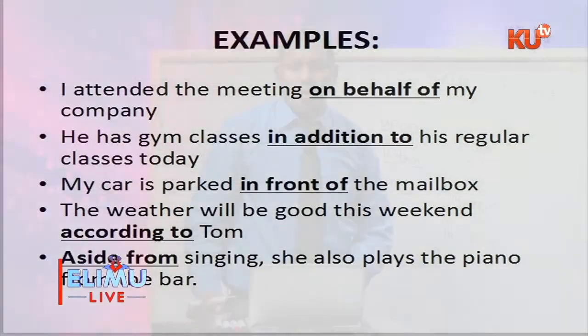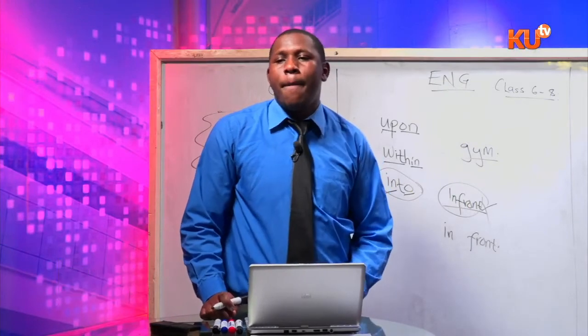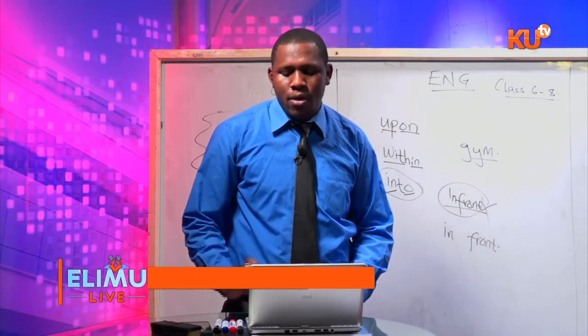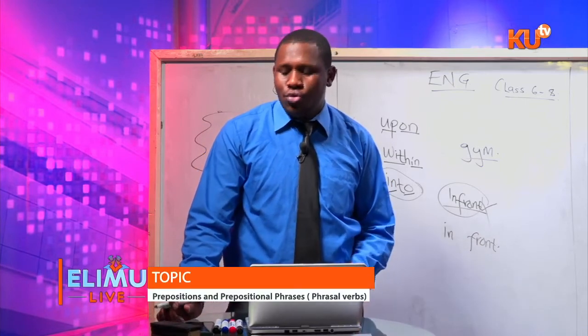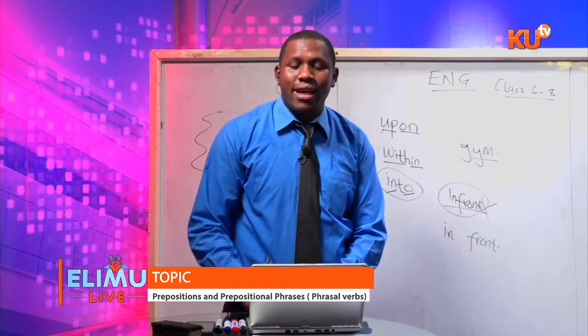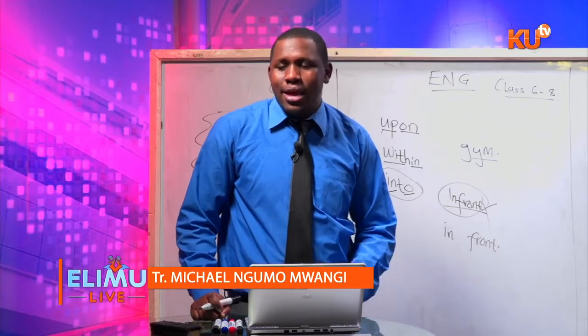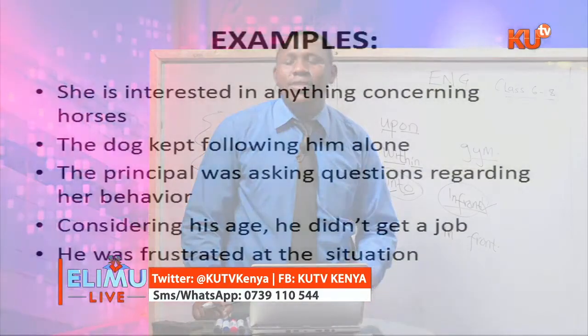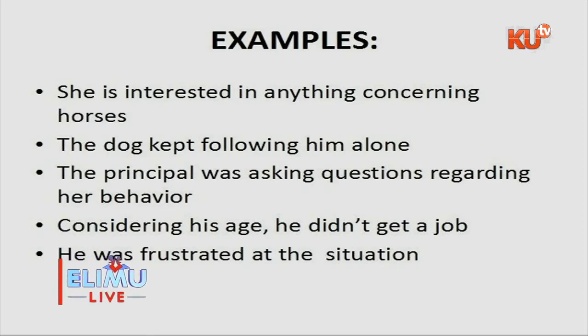The fourth group is participio prepositions, which have endings such as -ED or -ING. They include during, considering, concerning, and provided. Examples: she is interested in anything concerning horses; the dog kept following him; the principal was asking questions regarding her behavior; considering his age, he didn't get a job; he was frustrated at the situation.